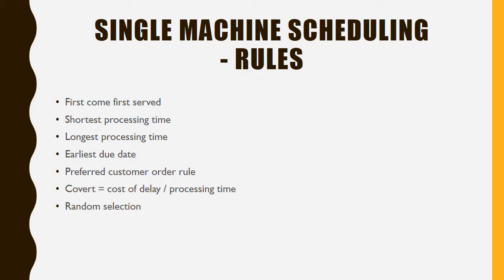The second rule is Shortest Processing Time. When there are four or five customers, the company checks the processing time of each job. The job with the minimum processing time is processed first on the single machine, and the job which requires the most time to process is scheduled last.